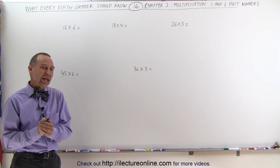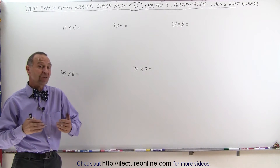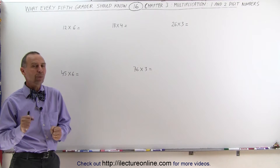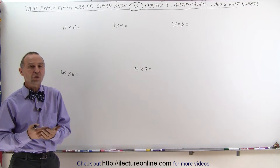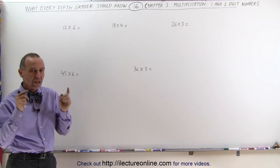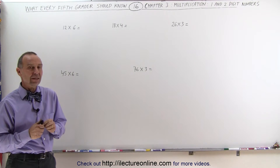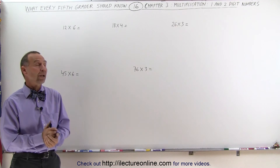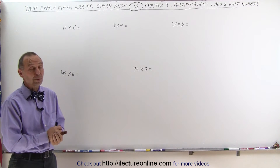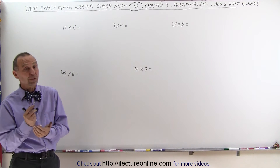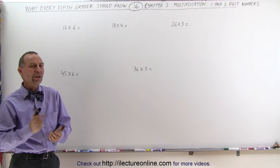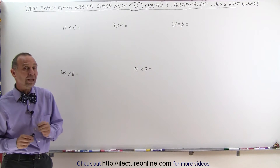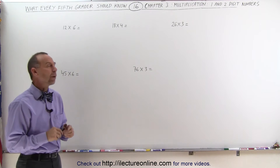Welcome to ElectronLine. Now that we've memorized our multiplication tables, we're ready to start utilizing that knowledge to solve these types of problems. What we're going to do now is multiplying a two-digit number with a one-digit number, and there are some tricks to that as well, so let's see what we can do.